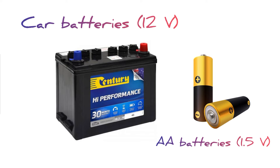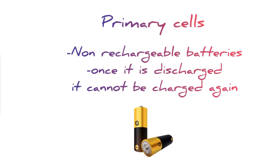Car batteries can generate up to 12 volts of electric current, however a small double-A battery can produce 1.1 volts, which is used mostly for low-drain electronic devices and gadgets. Note that producing higher voltages is not always beneficial. A battery that is not rechargeable is called a primary cell.